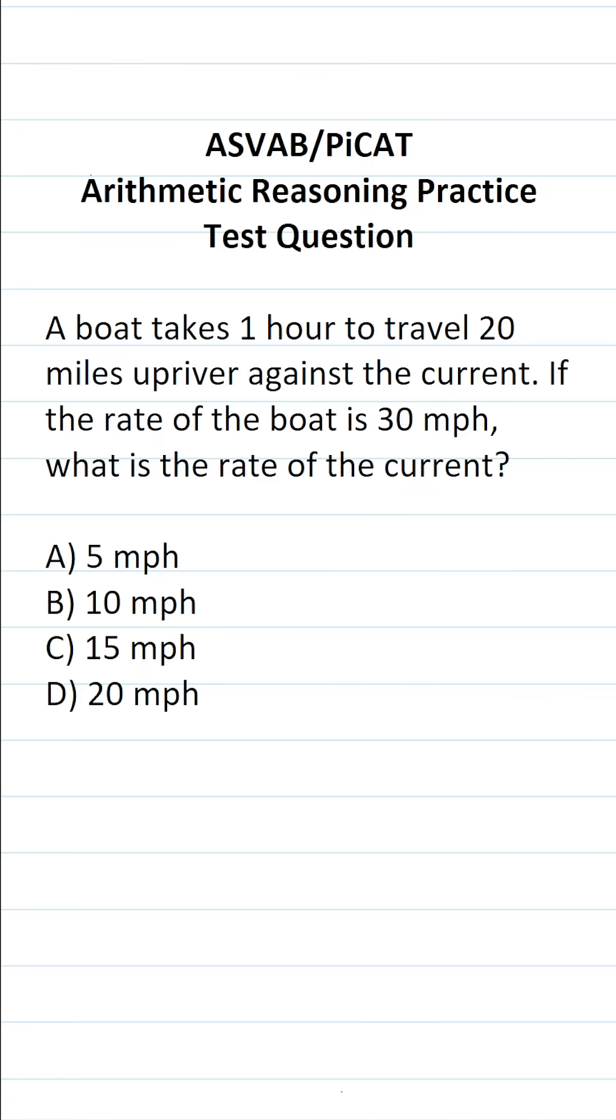This arithmetic reasoning practice test question for the ASVAB and PICAT says: A boat takes one hour to travel 20 miles upriver against the current. If the rate of the boat is 30 miles per hour, what is the rate of the current?